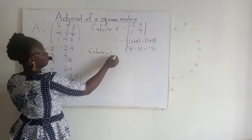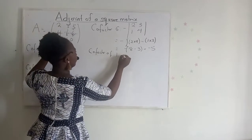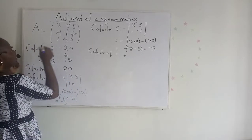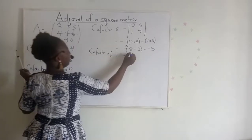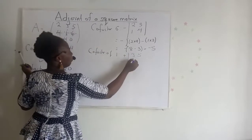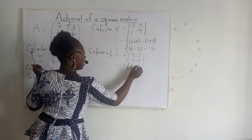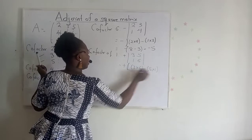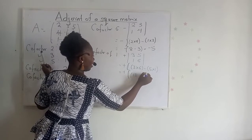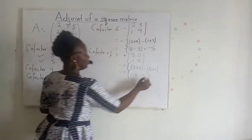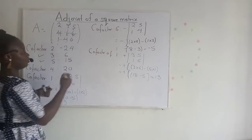The cofactor of element 1 at position row 3, col 1: the place sign is positive. Striking out the column and the row, I have the submatrix: 3, 5 / 1, 6. The determinant is plus 3 times 6 minus 5 times 1, which is 18 minus 5, giving positive 13.